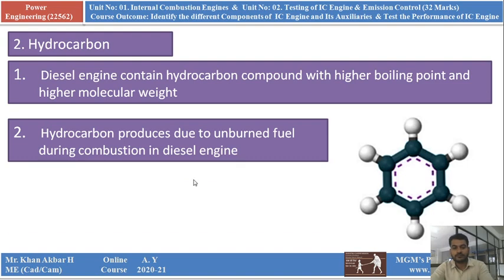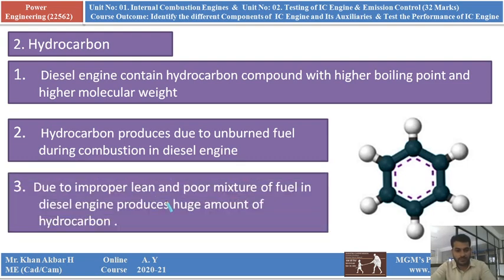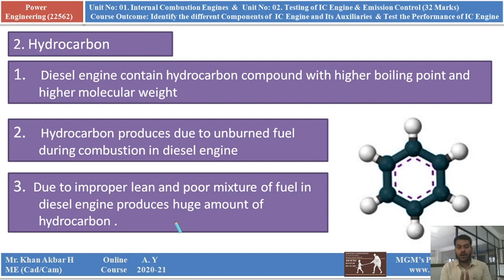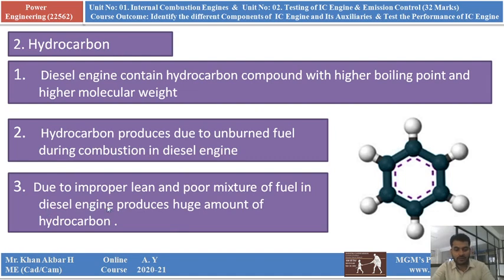Another reason for hydrocarbon production is improper lean and poor mixture of fuel in the diesel engine, which produces a large amount of hydrocarbons. Lean mixture means the fuel content is more than the required amount while air content is less. Poor mixture means the air-to-fuel ratio is not balanced. Because of lean and poor mixture, unburnt fuel is produced, which generates hydrocarbons — a pollutant in the diesel engine.